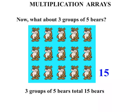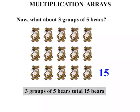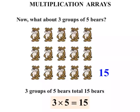So we can say that three groups of five bears total fifteen bears. And writing that in a number sentence: three groups of five is three times five. The total is fifteen — we can write that it equals fifteen. So we have three times five equals fifteen.